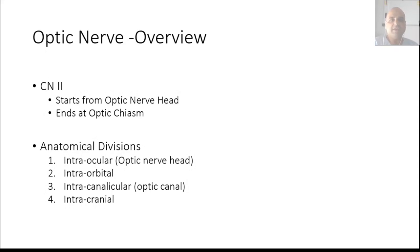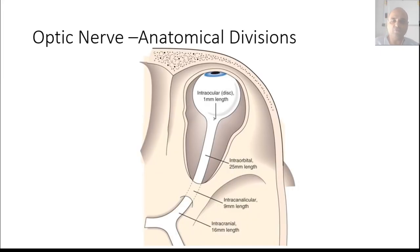We'll start with an overview of the second cranial nerve, the optic nerve. It starts from the optic nerve head and ends at the optic chiasm. It is divided into four anatomical divisions: an intraocular part, which is basically the optic nerve head or optic disc; an intraorbital part within the orbit; an intracanalicular part as it exits the orbit into the cranial cavity; and then the intracranial part.